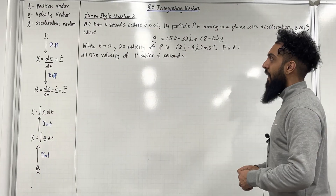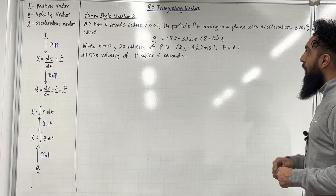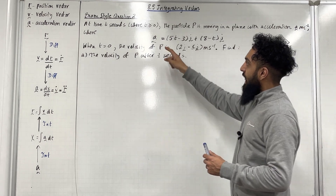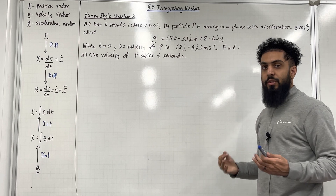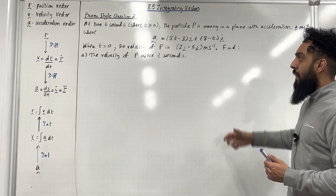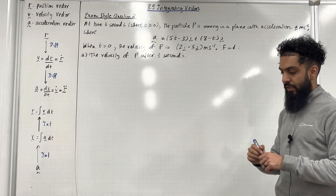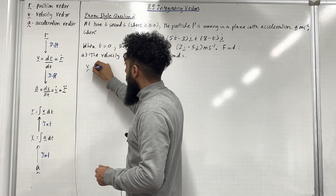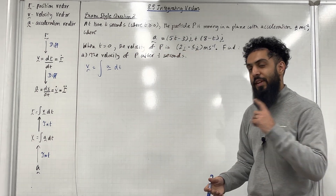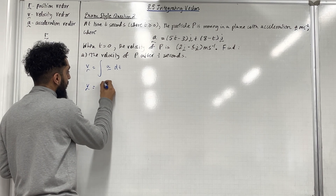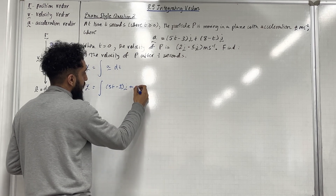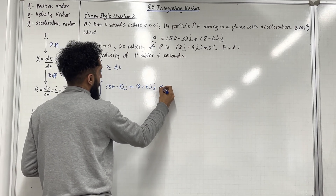Here is exam style question 2. At time T seconds, where T is greater than or equal to 0, the particle P is moving in a plane with acceleration A squiggle meters per second squared, where the acceleration vector is given by this. When T equals 0, the velocity of P is 2I minus 5J meters per second. Find part A: the velocity of P after T seconds. To find the velocity vector, we need to integrate the acceleration vector with respect to T. The velocity vector is given by the integral of (5T minus 3)I plus (8 minus T)J, DT.